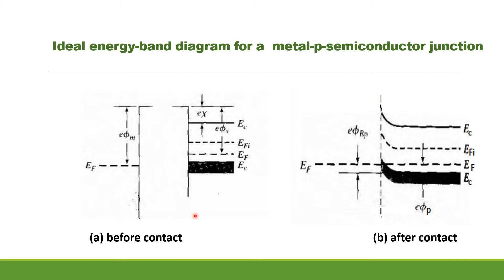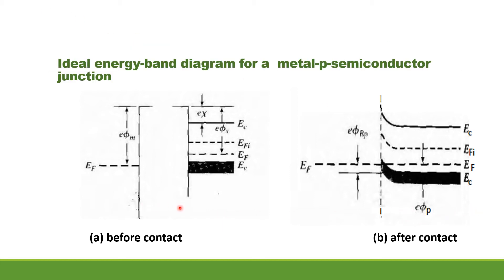The ideal energy band diagram for a metal and P-type semiconductor junction before contact and after contact is shown. In this case, φm is greater than φs. When contact is made, electrons from the semiconductor side flow into the metal to achieve thermal equilibrium. When they move, they leave holes behind in the semiconductor region. This excess concentration of holes at the surface makes the surface of the semiconductor more P-type. Electrons from the metal can readily move into this empty state in the semiconductor. This charge movement corresponds to holes flowing from semiconductor into metal, and we can also visualize holes in the metal flowing into the semiconductor. This junction is also an ohmic contact.